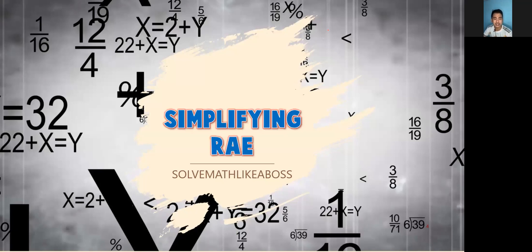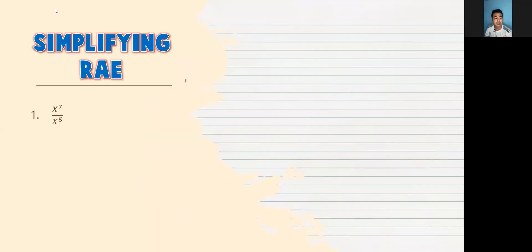So let's start with simplifying RAE. Paano ba tayo mag-simplify ng RAE? In simplifying RAE, it's like we're simplifying fractions but with variables. Kasi meron na tayong mga variable na sinisimplify din.